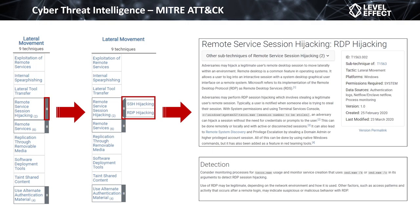Looking at the lateral movement tactics column, we can see Remote Service Session Hijacking — that's how we categorize what an adversary is doing on our network. By selecting the gray bar to the right, we see sub-techniques: there is more than one way to perform remote service session hijacking. Clicking on it reveals SSH hijacking and RDP hijacking. Selecting the RDP hijacking sub-technique takes us to its overview page.